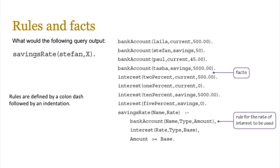Now if you look at the data set on the right hand side, which has a lot of facts, you'll also see an example of a rule definition towards the bottom of the screen. Remember, the syntax rules are defined by a colon dash followed by an indentation. That is something we've used to define a rule which is called savings_rate and takes two parameters or variables called name and rate. Based on that, it will work out what the savings rate is.